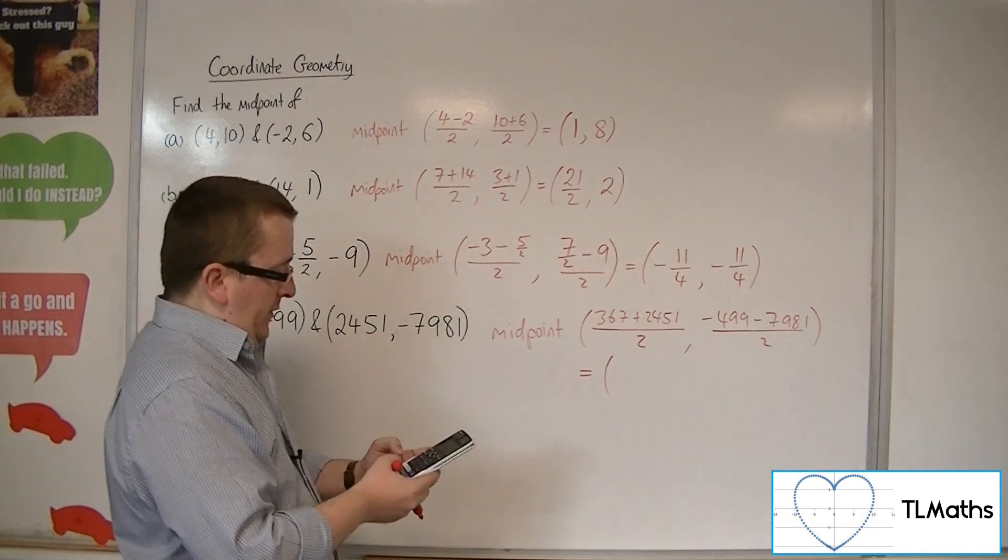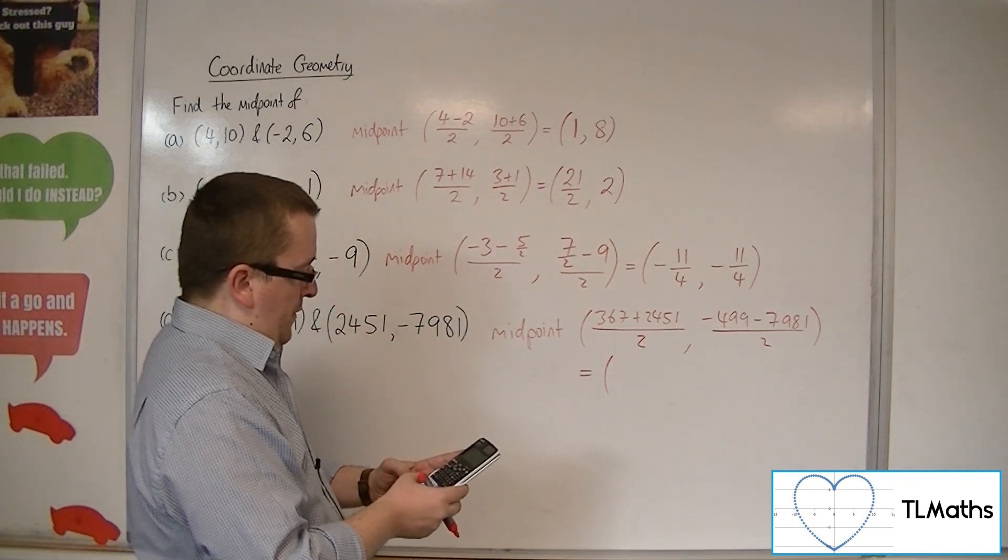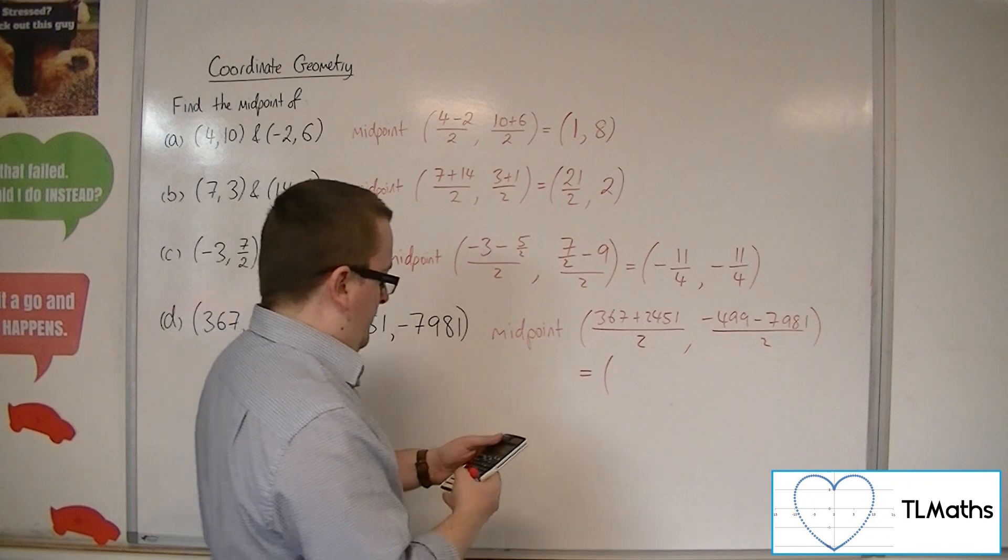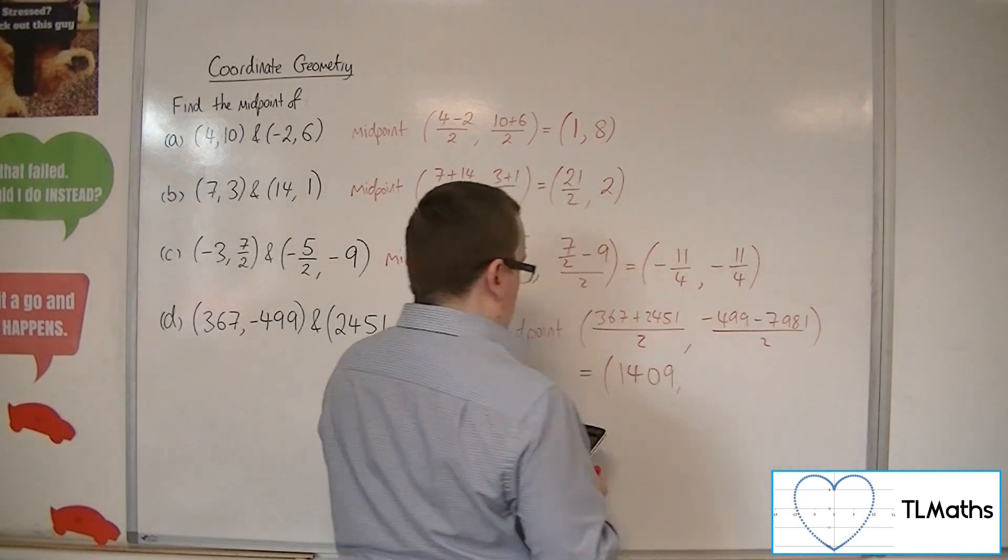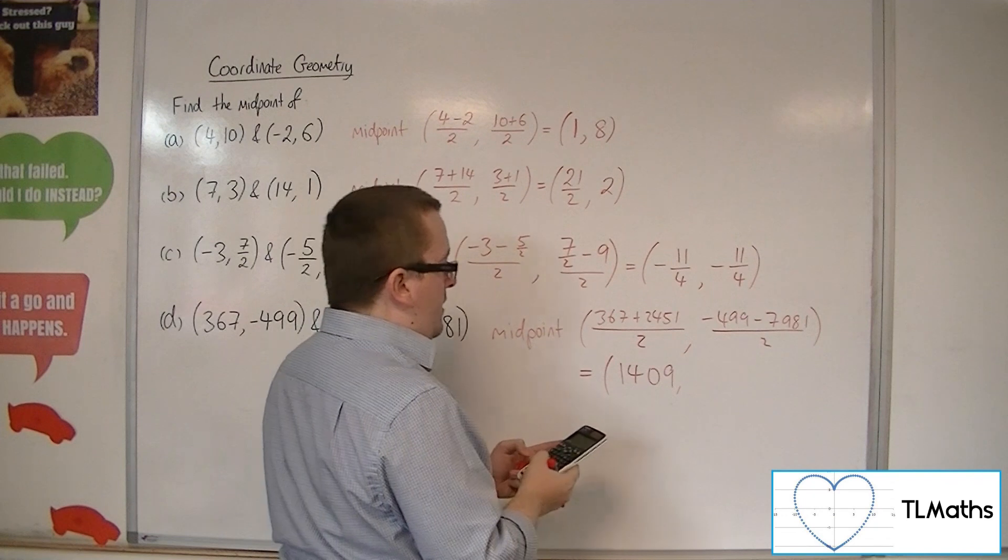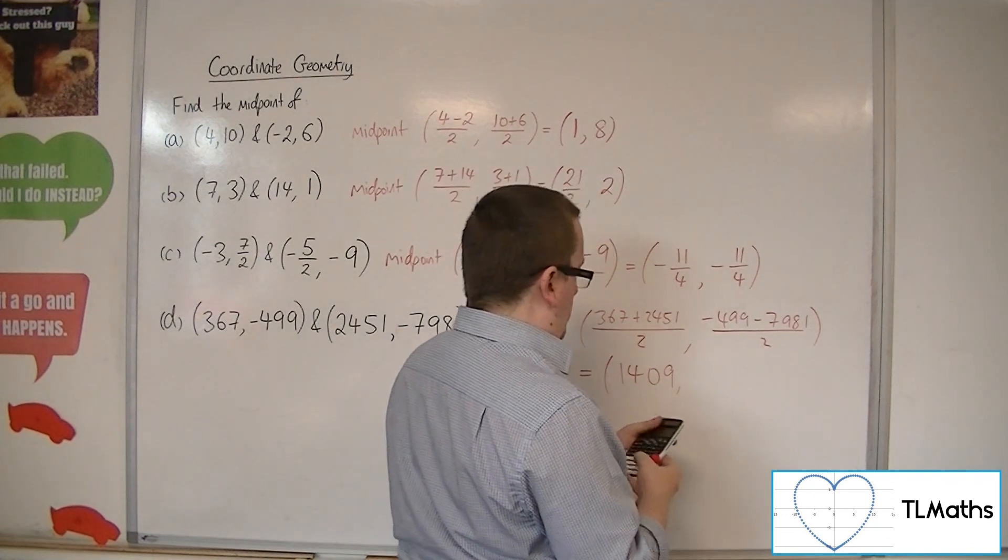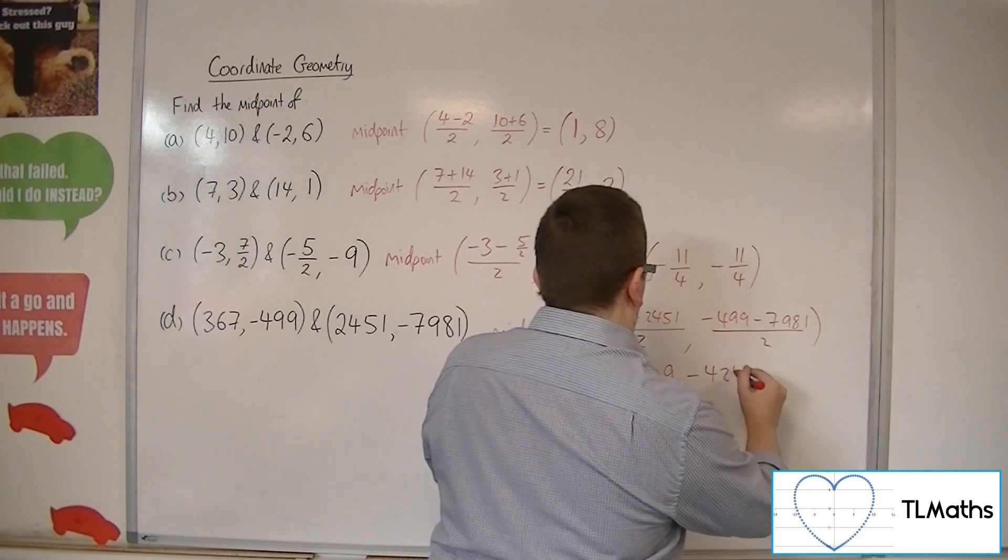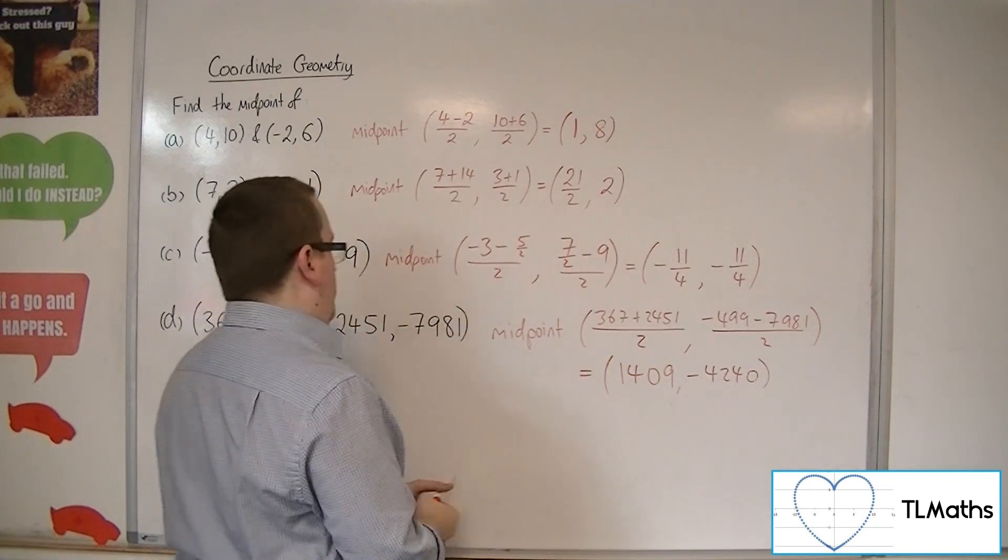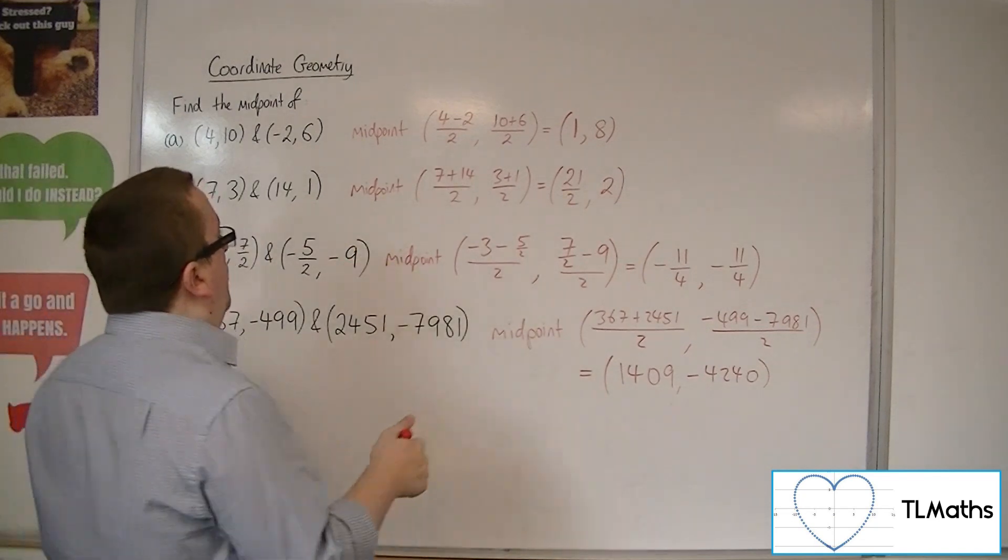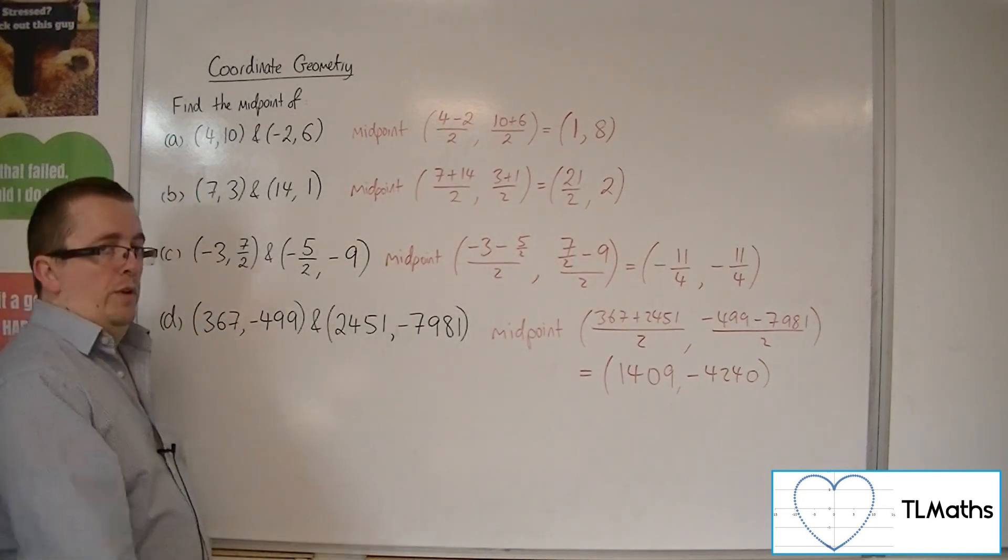So 367 plus 2451 over 2 is 1409. And minus 499, take away 7,981, all over 2 is minus 4,240. And these are the midpoints of the given pairs of coordinates.